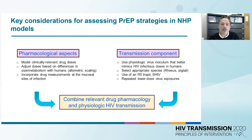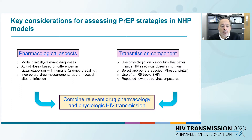There are two key considerations for assessing PrEP strategies in NHP models. First, we need to consider pharmacological aspects. It is important that we model clinically relevant drug dosing, and if we don't do that, we need to understand the translation of those doses. We need to adjust doses based on the difference in size and metabolism between macaque and humans, which is called allometric scaling, and we should incorporate drug measurements at the site of infection. This is one of the advantages of this model that led us to collect specimens in multiple locations and understand drug levels.